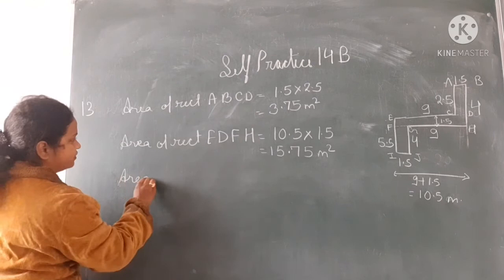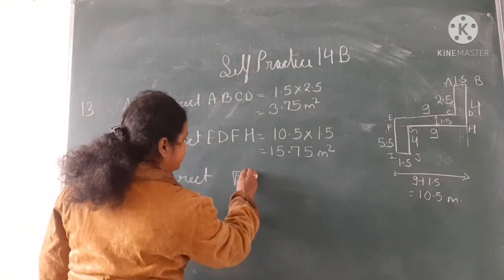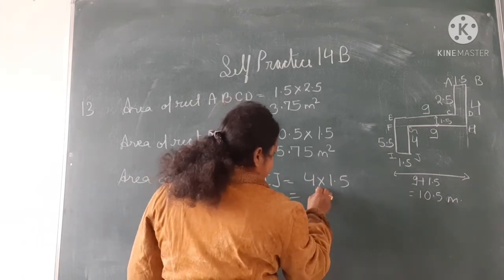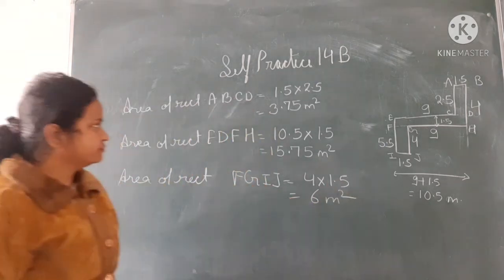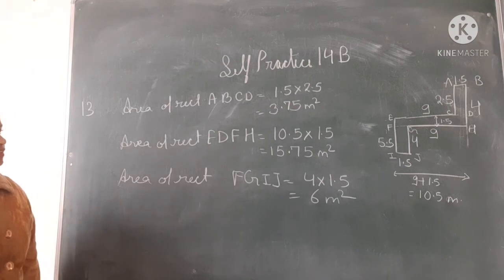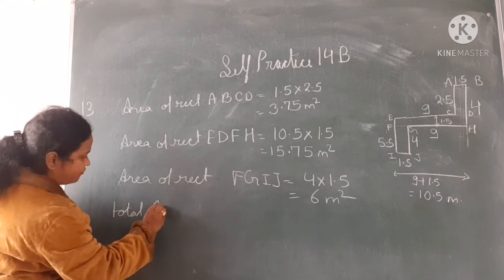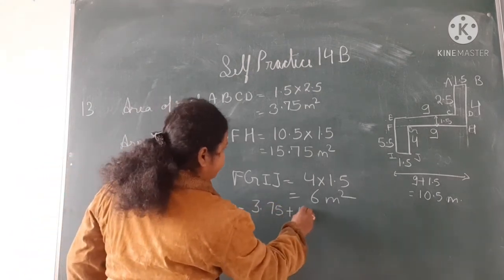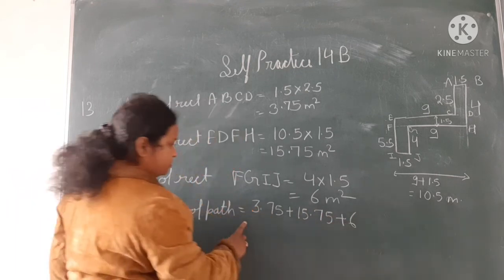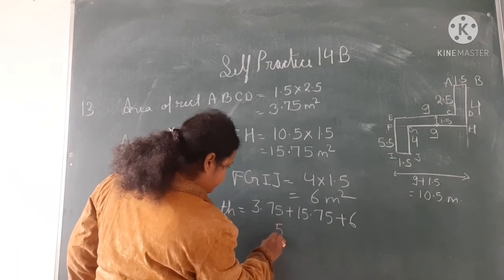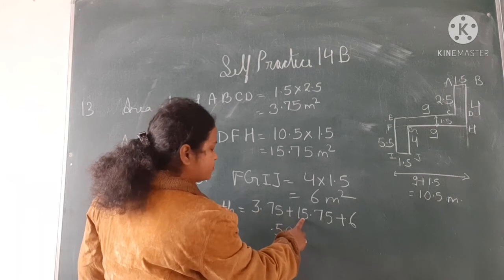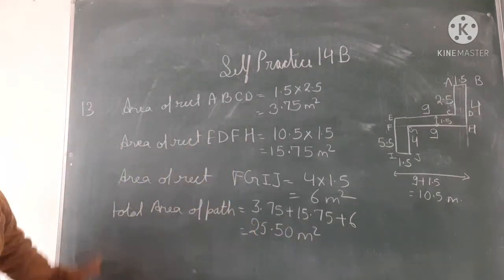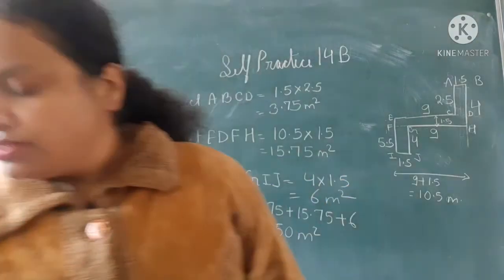Area of rectangle FGIJ equals 4 into 1.5, that is 6 metre square. Total area of path equals 3.75 plus 15.75 plus 6, which gives 25.50 metre square. This is the area of the path.